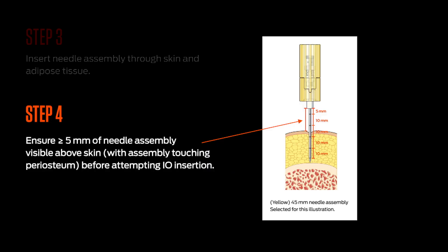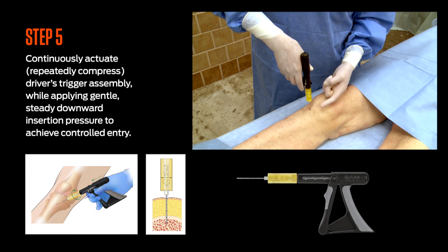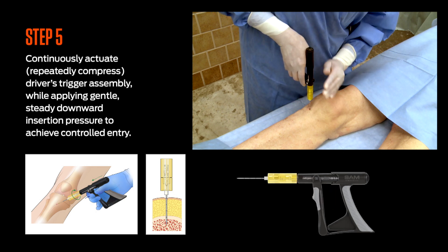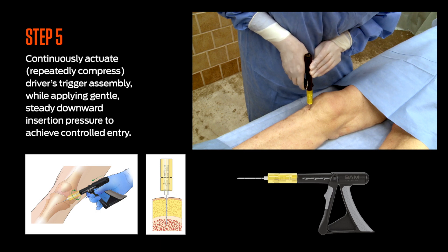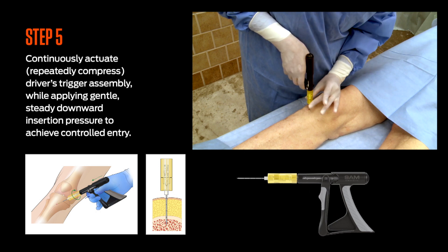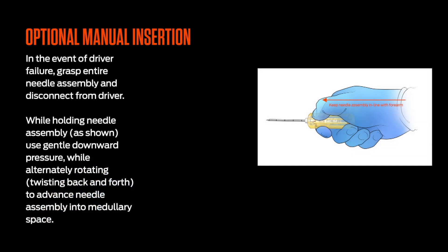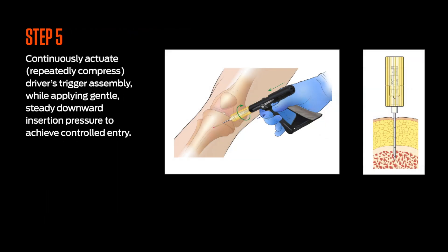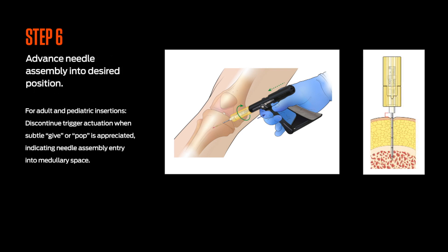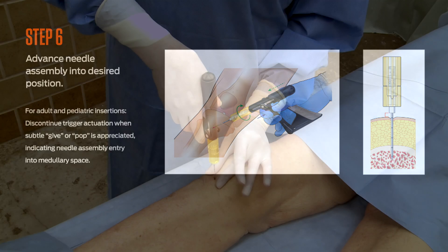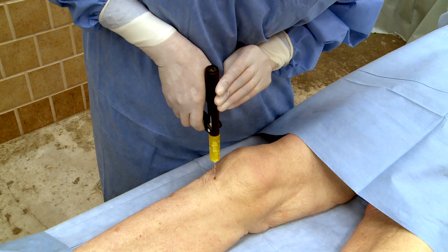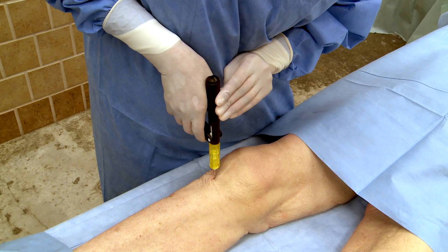It's important to reiterate that needle assembly selection is based upon overlying tissue depth at the insertion site. Step 5: Continuously actuate or repeatedly compress the driver's trigger assembly while applying gentle, steady, downward insertion pressure to achieve controlled entry. It's important not to use excessive force — use minimal, gentle downward insertion pressure allowing the needle assembly tip's rotation to penetrate the compact bone. Step 6: Advance the needle assembly into the desired position. For adult and pediatric insertions, discontinue trigger actuation when a subtle give or pop is appreciated, indicating needle assembly entry into the medullary space.